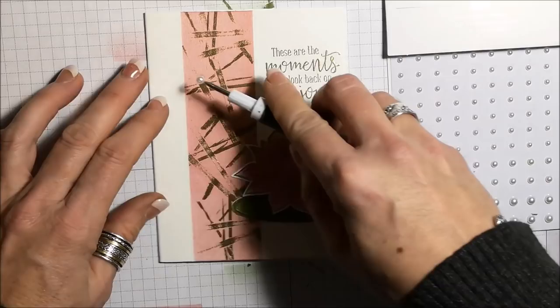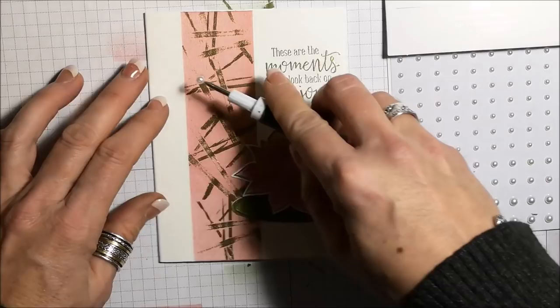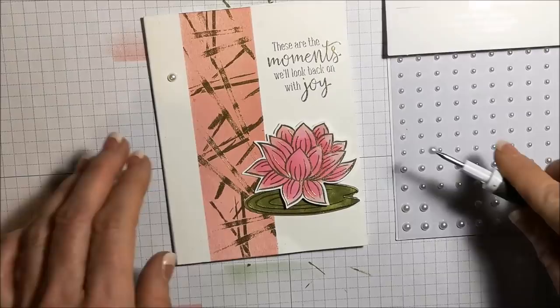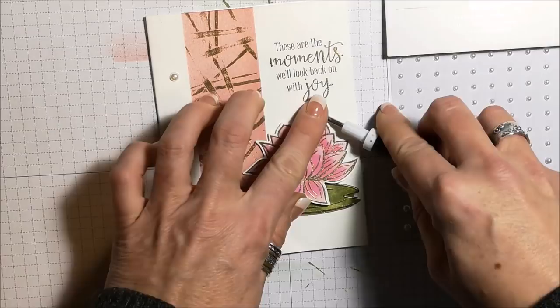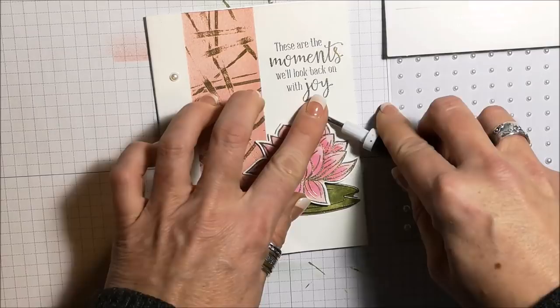Okay, let's put these on. I'm going to add some pearls for a bit of dimension. Put one there. And there is the finished card. So that's the rubber band technique with some embossing.